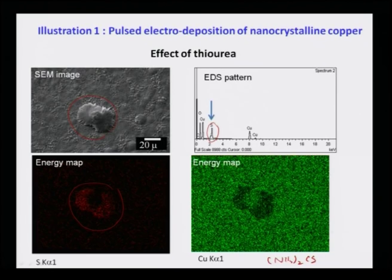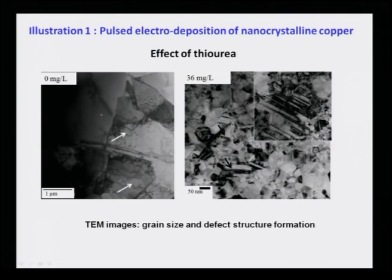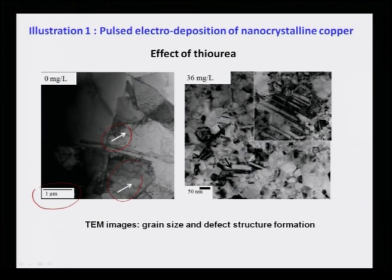Looking at the copper EDS map, copper is uniformly distributed across the whole surface except at the protrusion positions. One can also use TEM: the bright field TEM image of the sample deposited without thiourea shows very large grains of 2–3 microns containing many dislocations. On the other hand, with 36 mg/L of thiourea the grain size is extensively reduced from micron size to nanometer size — most grains are less than 100 nm.